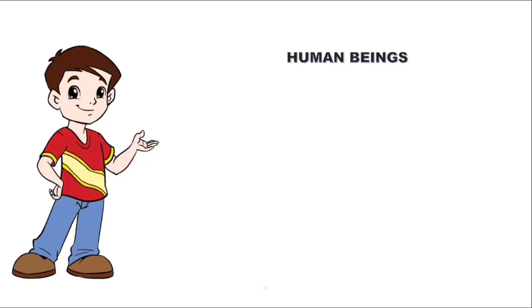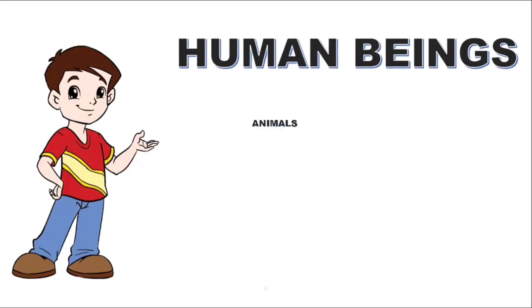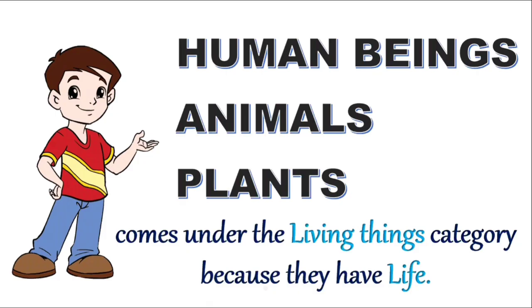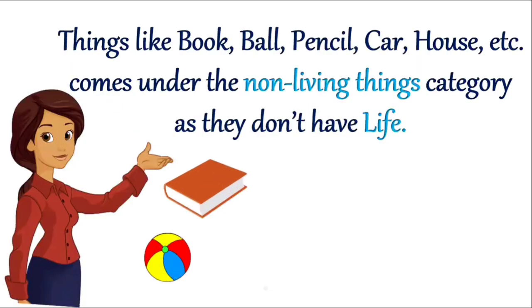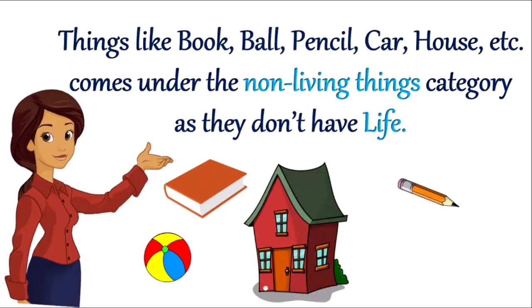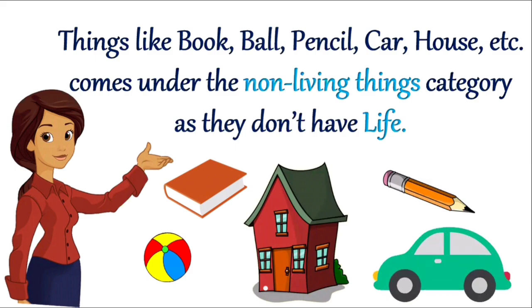Human beings, animals, and plants come under the living things category because they have life. Whereas things like book, ball, pencil, car, house, etc. come under the non-living things category as they don't have life.